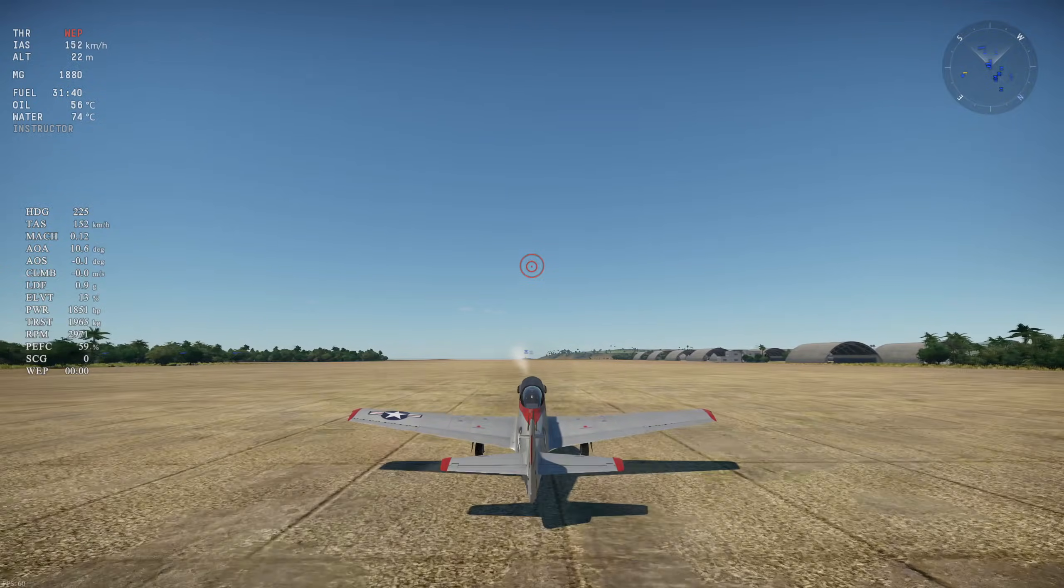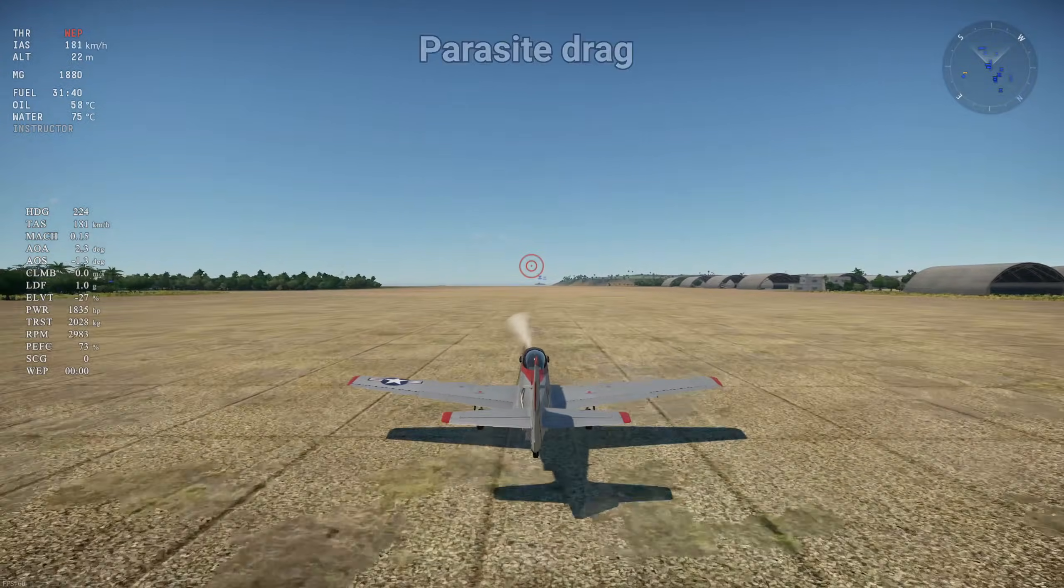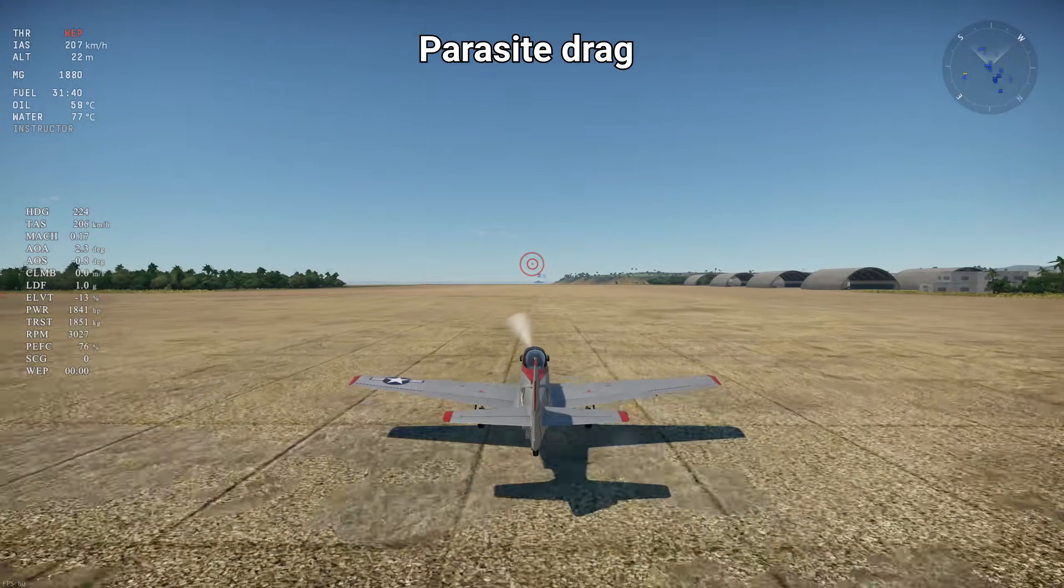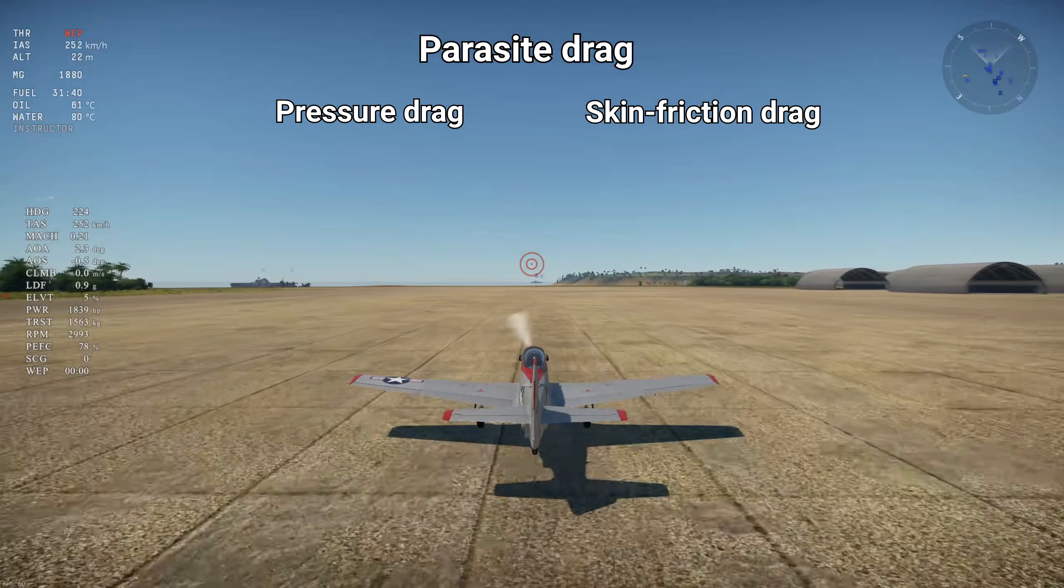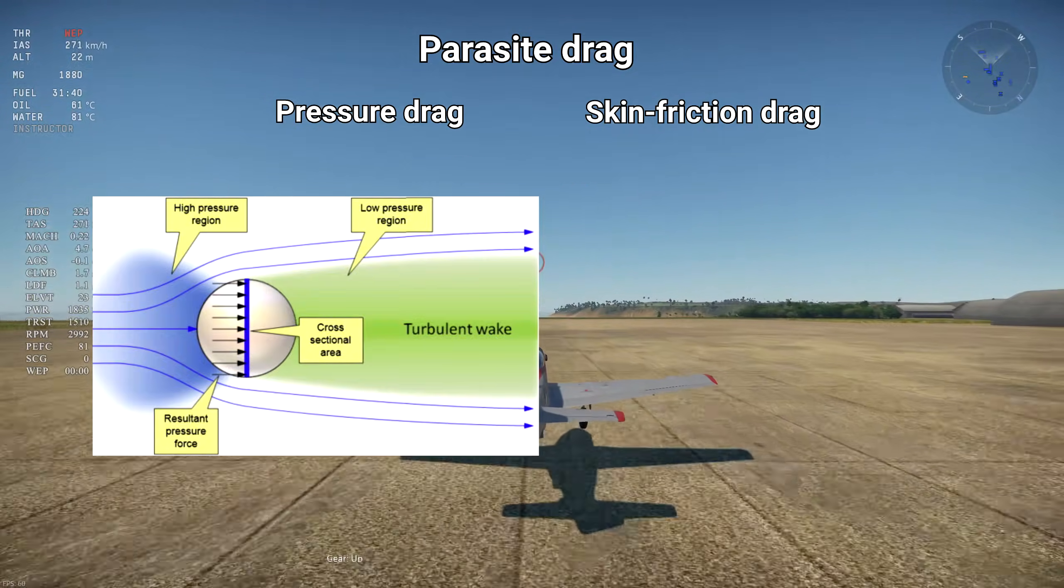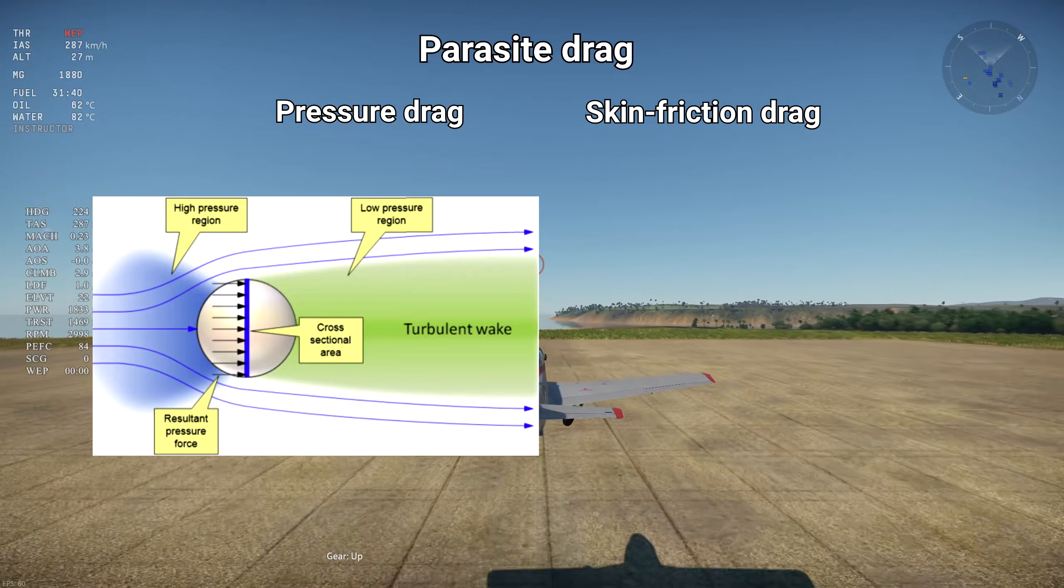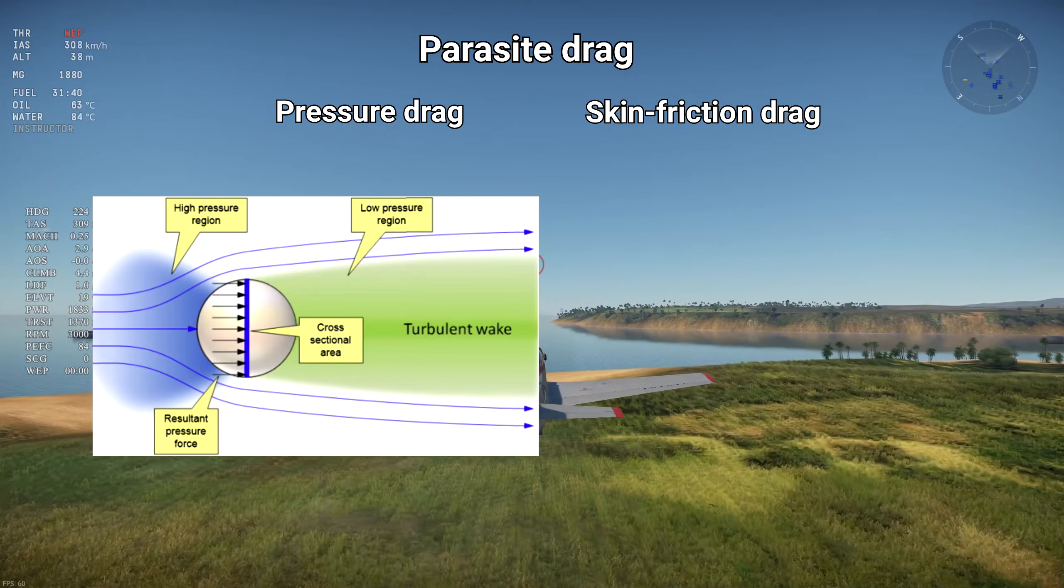There are a few types of drag. The one we're interested in today is parasite drag, which is divided into two categories: pressure drag and skin friction drag. Pressure drag comes from the difference between the higher pressure at the front of the object and the lower pressure at the back of the object, pretty intuitive.